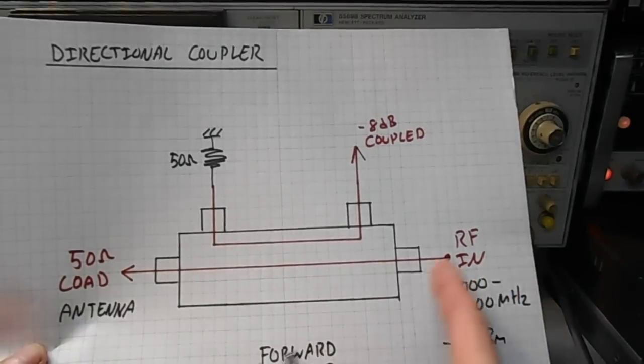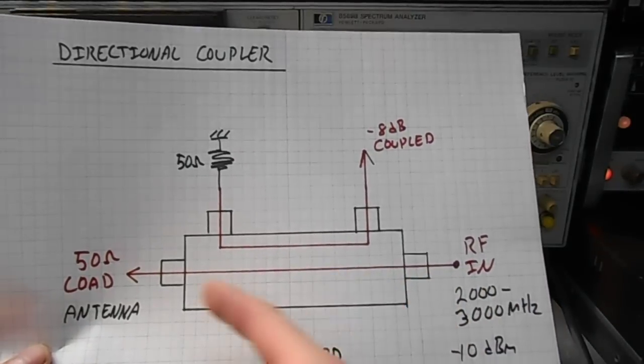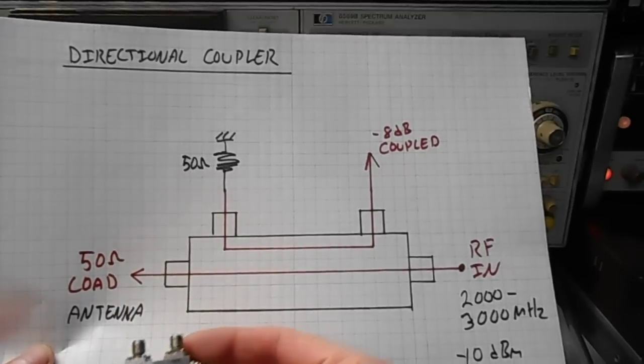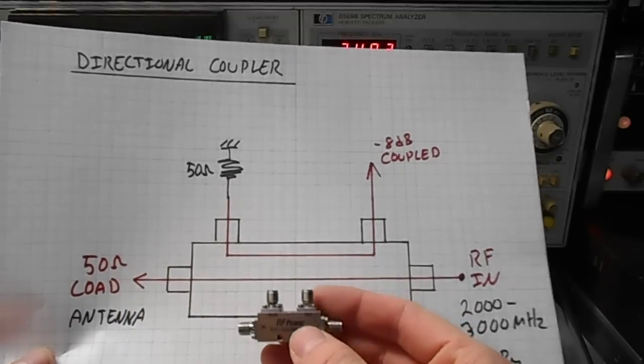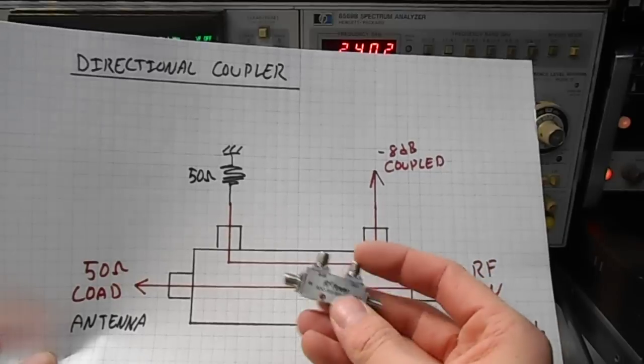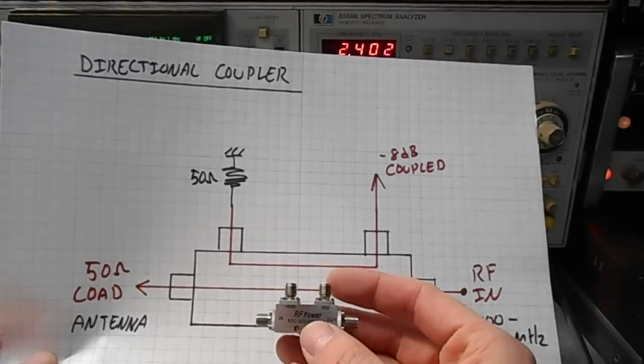When the RF comes in one port, it passes through with minimal loss into our load. And on the top here, there's a coupled port. On this particular directional coupler, the coupling is 8 dB.